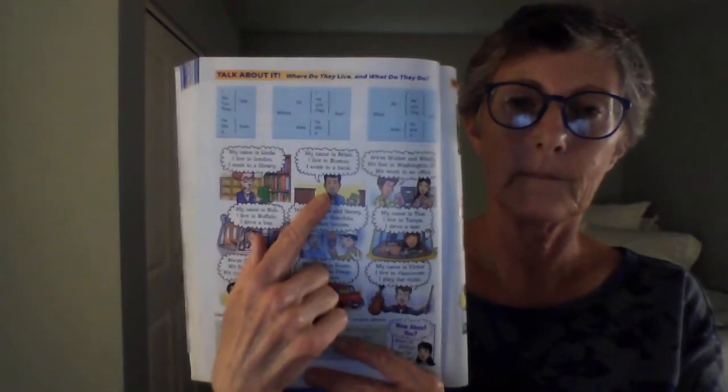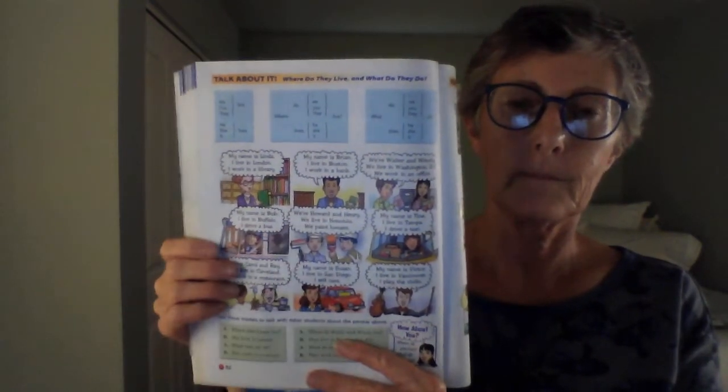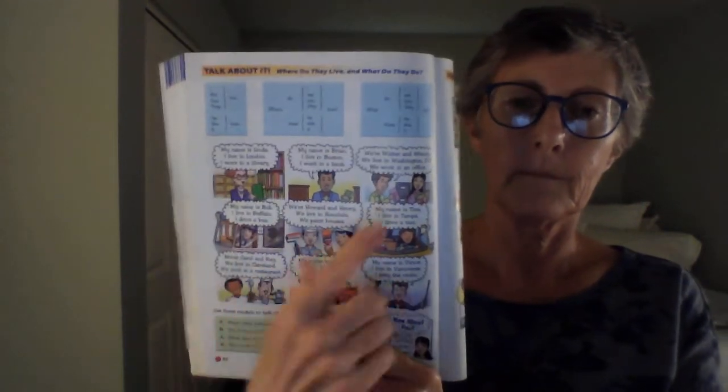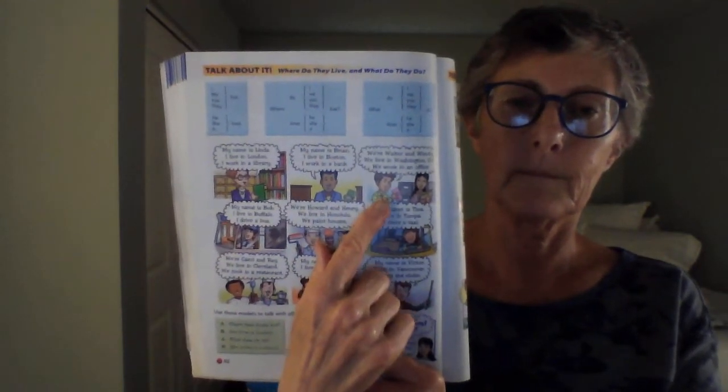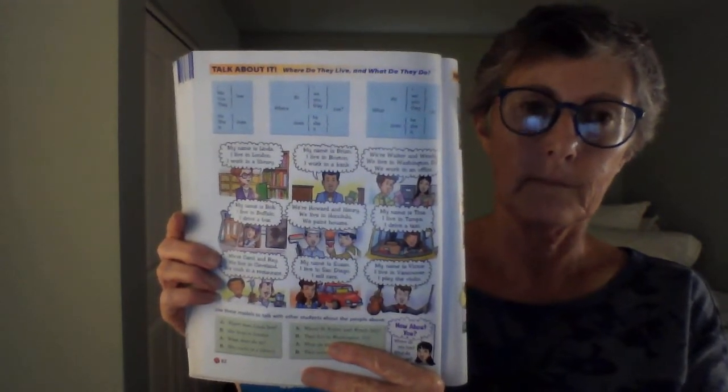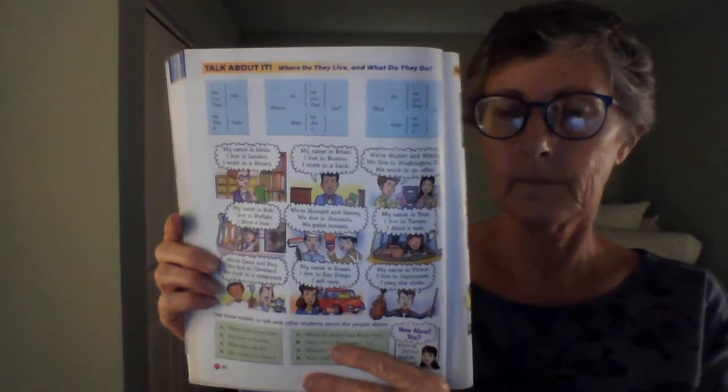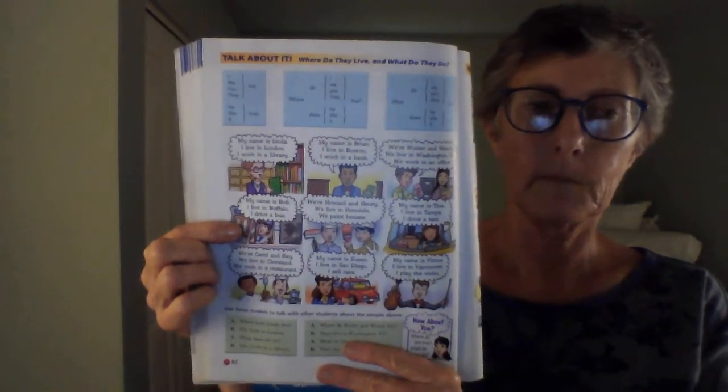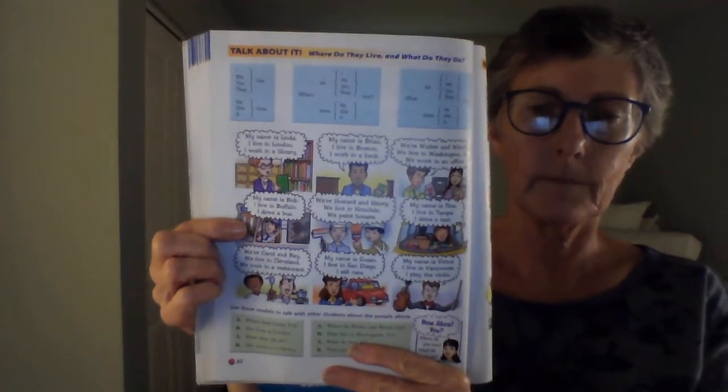My name is Brian. I live in Boston. I work in a bank. We're Walter and Wendy. We live in Washington, D.C. We work in an office. My name is Bob. I live in Buffalo. I drive a bus.